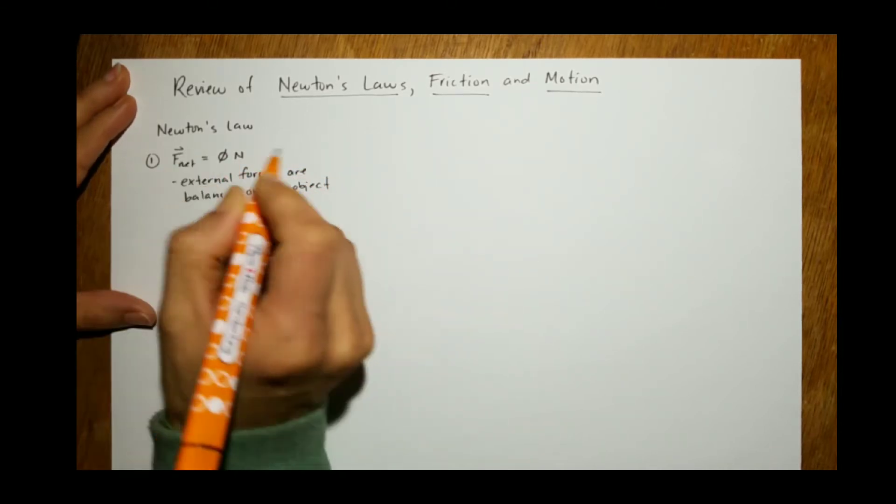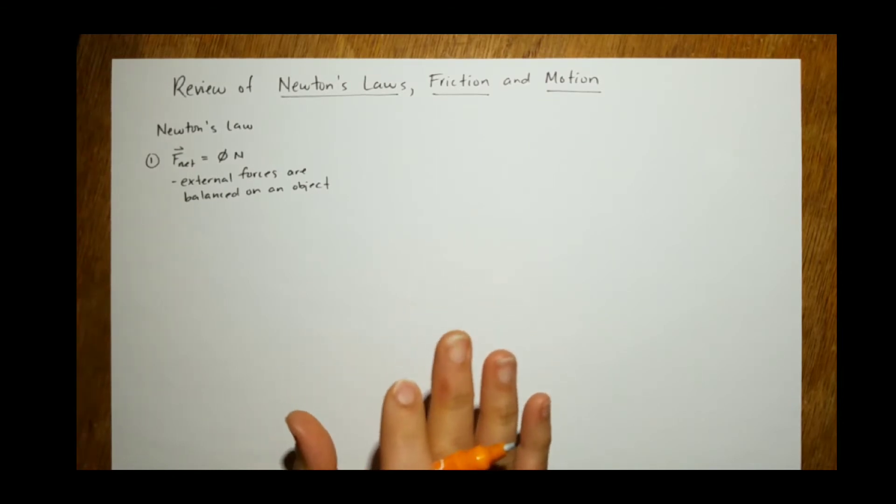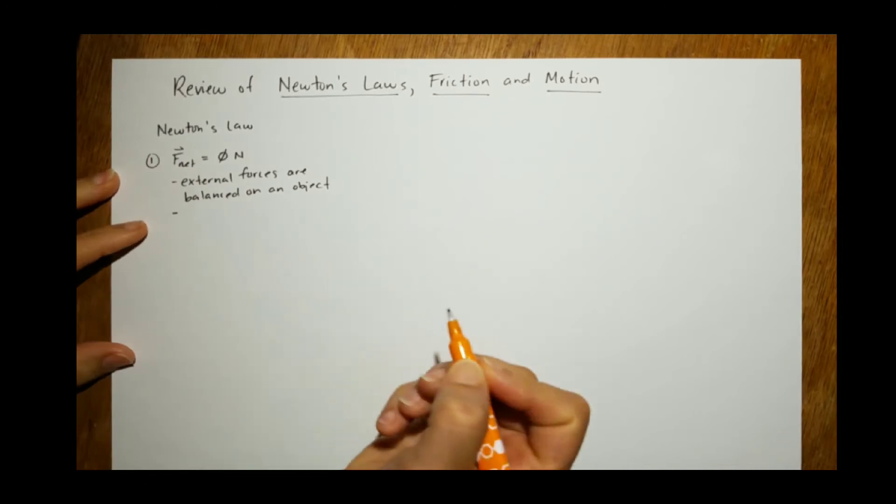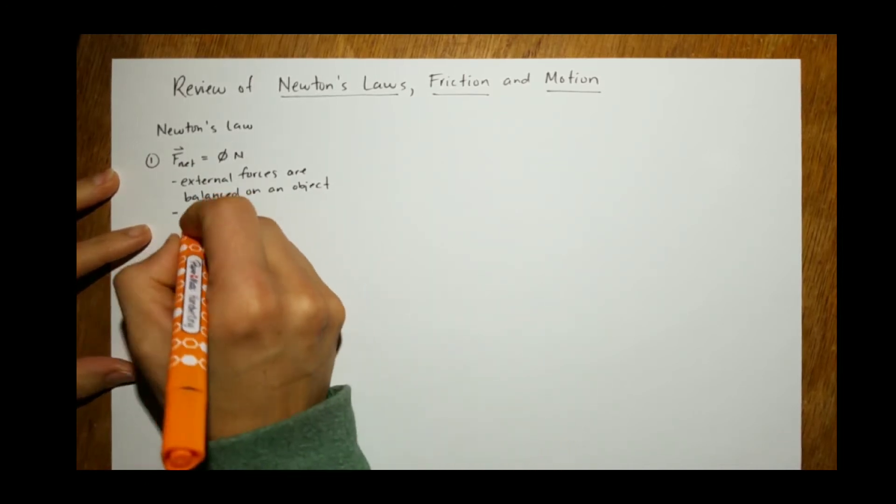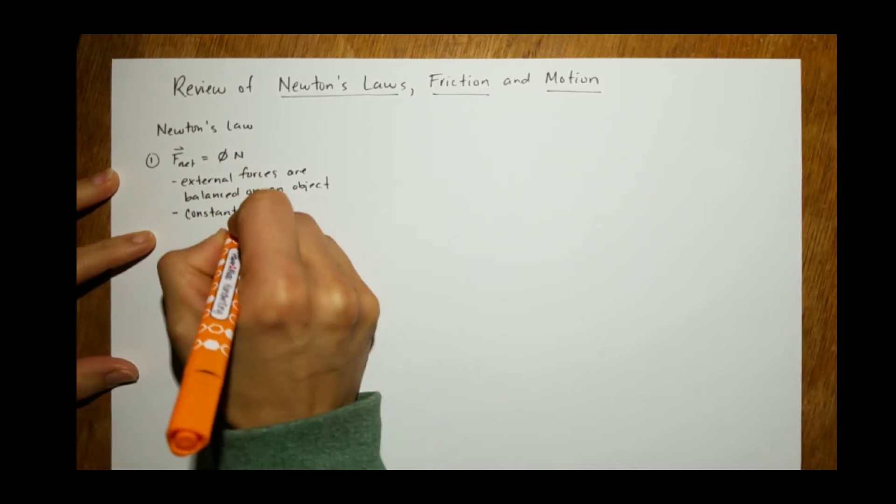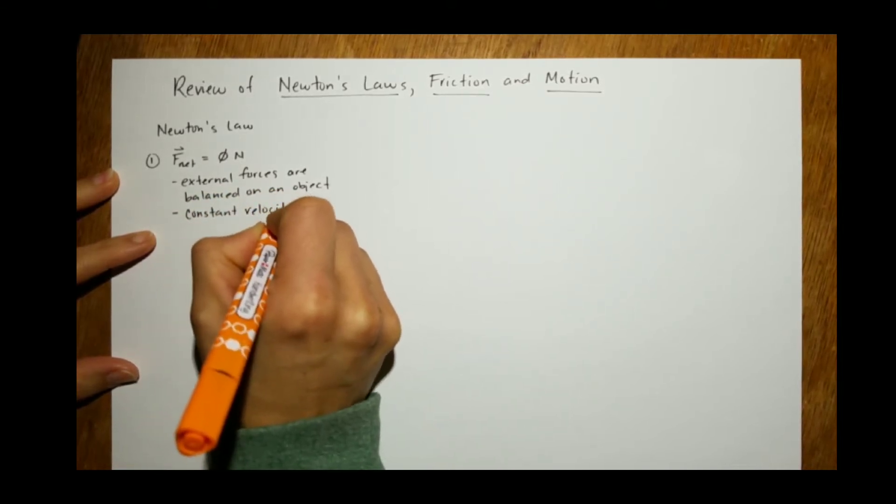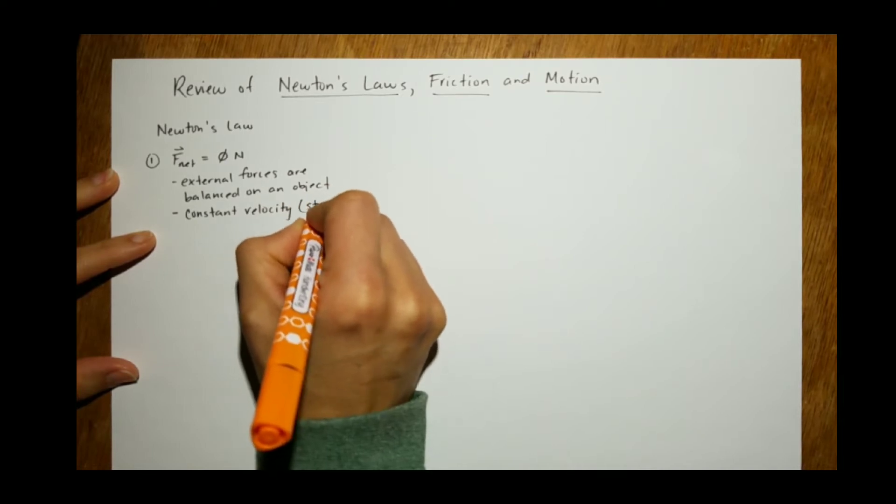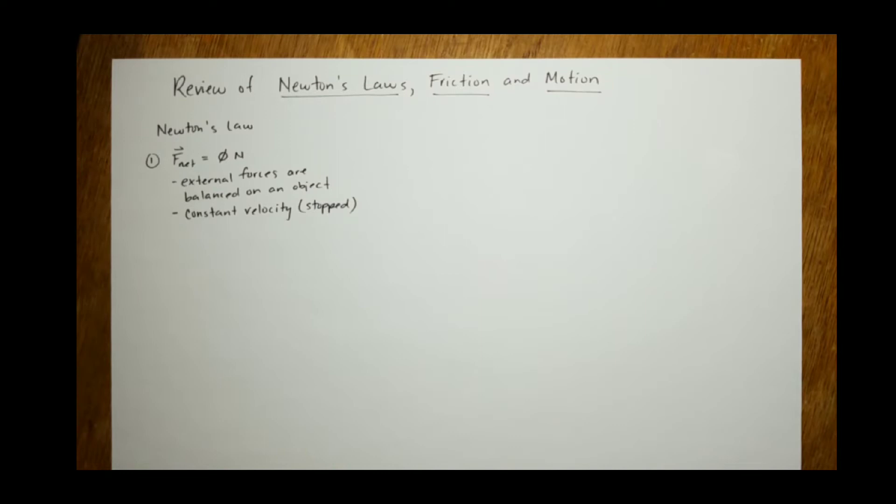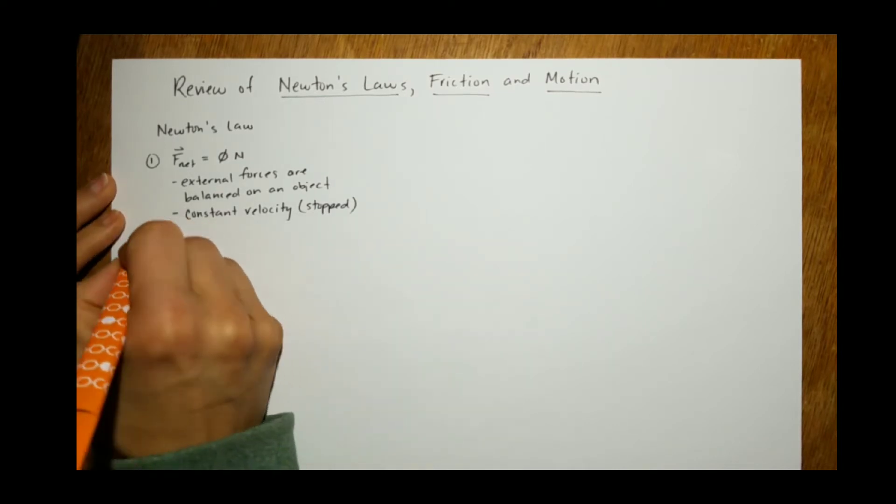So F net equals zero means external forces are balanced on the object. What does it mean about the motion? It means it's moving at a constant velocity. It also means it could be stopped because zero velocity is a uniform velocity.